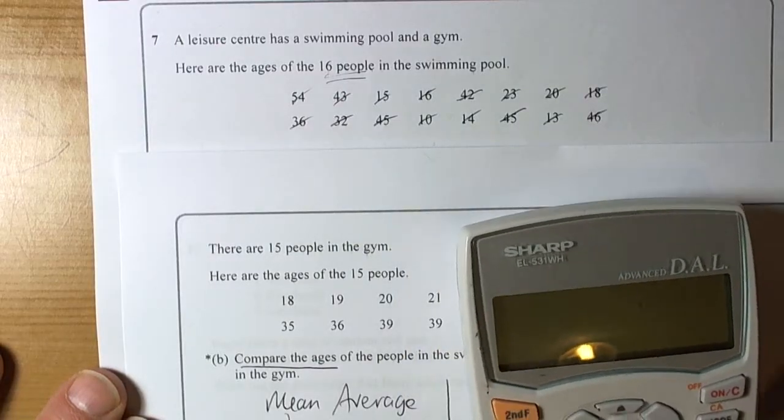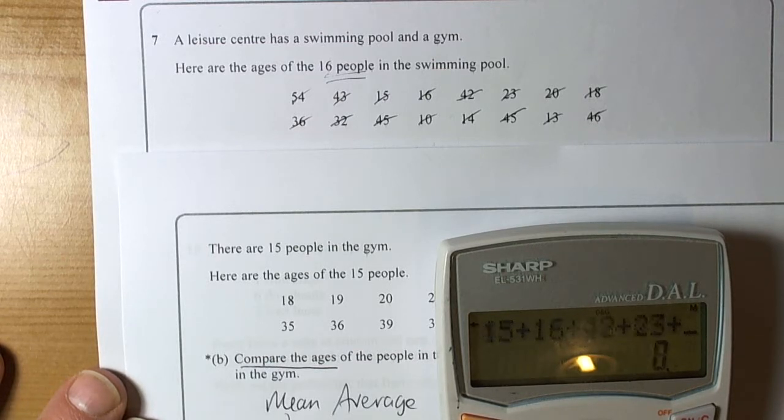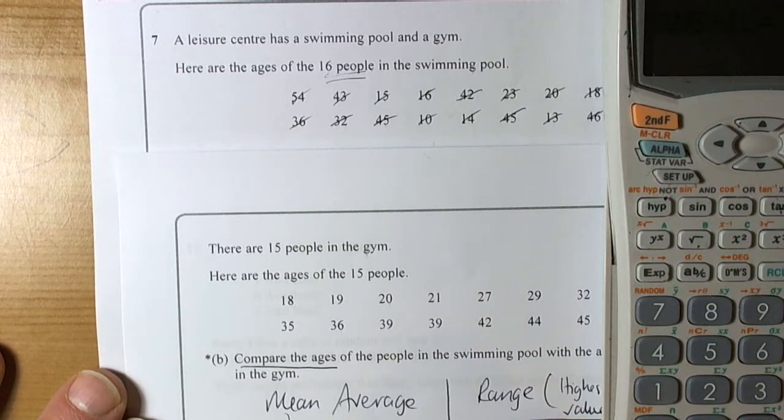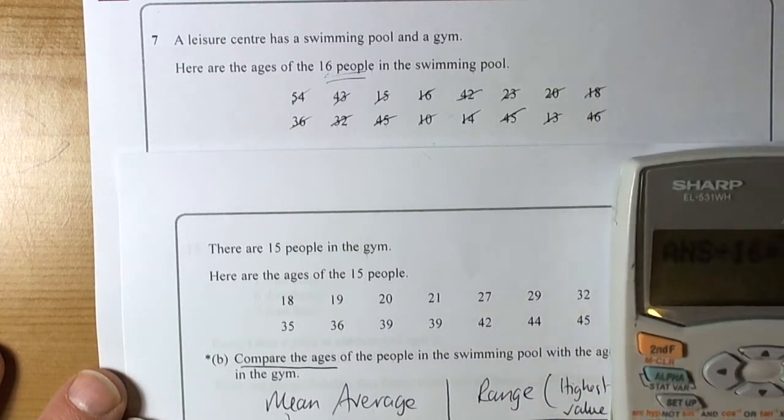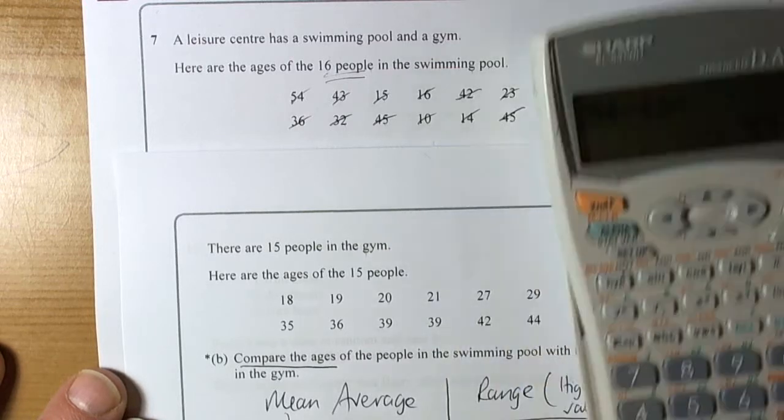Again a nice table just to kind of get a feel of what's going on. So we've got to do the mean average. So that means we're going to be adding up all those numbers. So 54 plus 43, plus 15, plus 16, plus 42, plus 23, plus 20, plus 18, plus 36, plus 32, plus 45, plus 10, plus 14, plus 45, plus 13, plus 46 equals. And then divide that by 16. Okay so 29 and a half. Okay so for the swimming data the mean average was 29 and a half years. And the range was the highest value, which was 54, minus the lowest value, which was 10. So 44. So the range was 44.